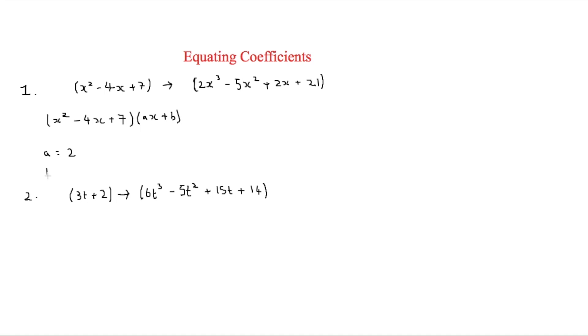And then b, we're equating the 7. And this 7 here goes to the 21 here. So in order to get that we'll times it by 3. So therefore what you're times it by is 2x plus 3.